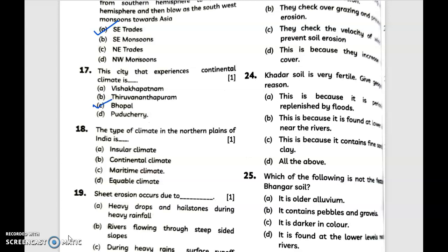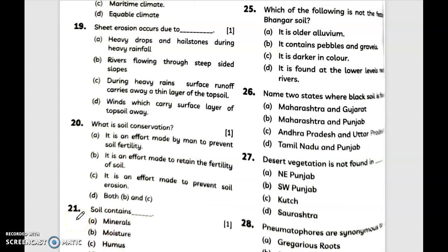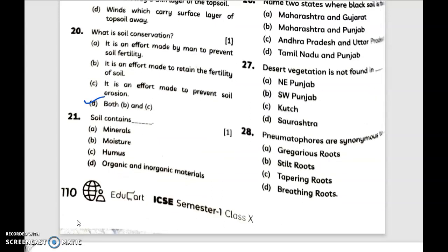Bhopal is located inside of the continent as it has a continental climate. Now the type of climate in the northern plains of India is answer B, continental climate. Question number 19: sheet erosion occurs due to... answer is option C. During heavy rains, surface runoff carries away a thin layer of the topsoil. What is soil conservation? Both B and C. Soil contains... answer is option D.